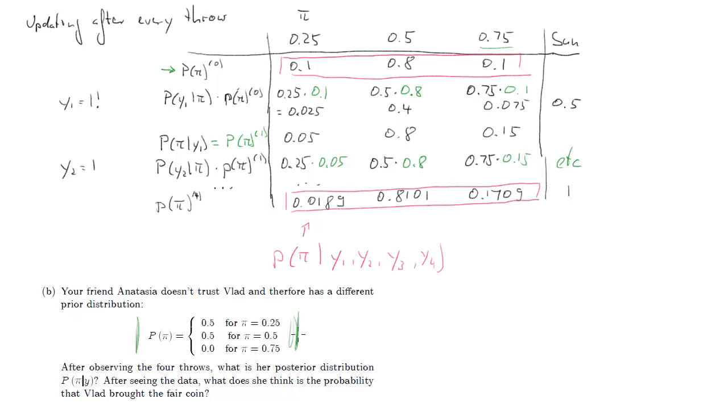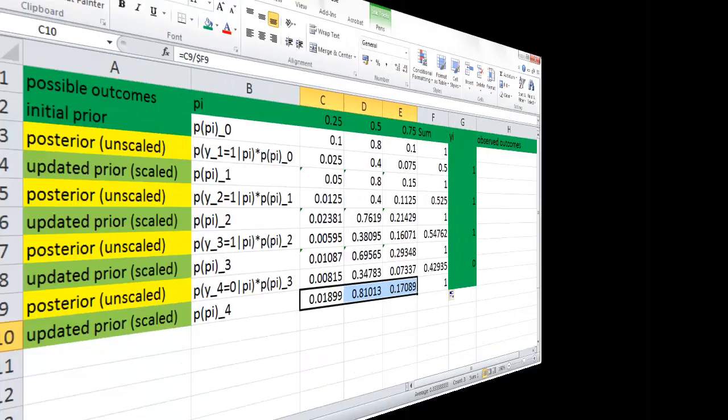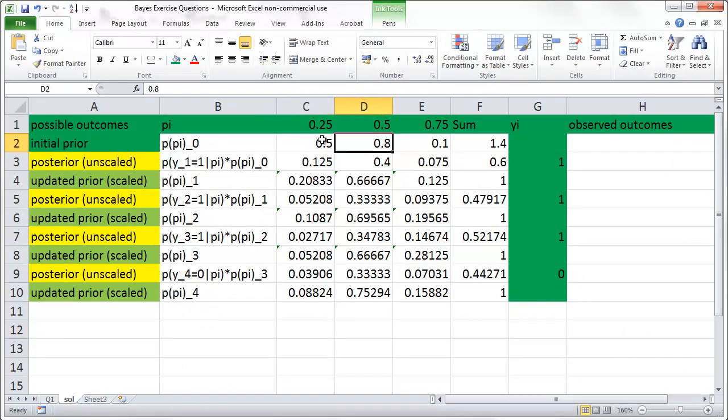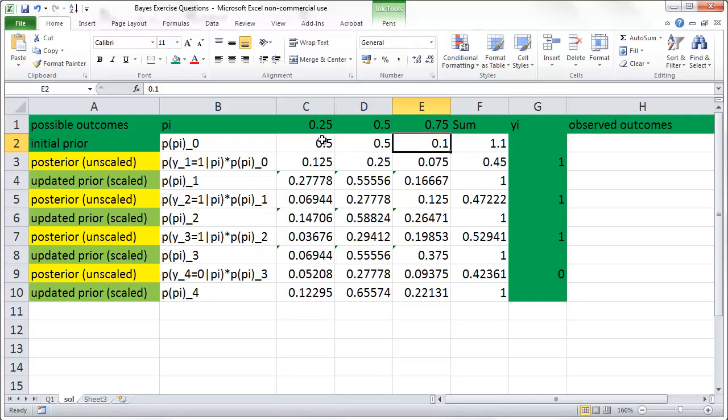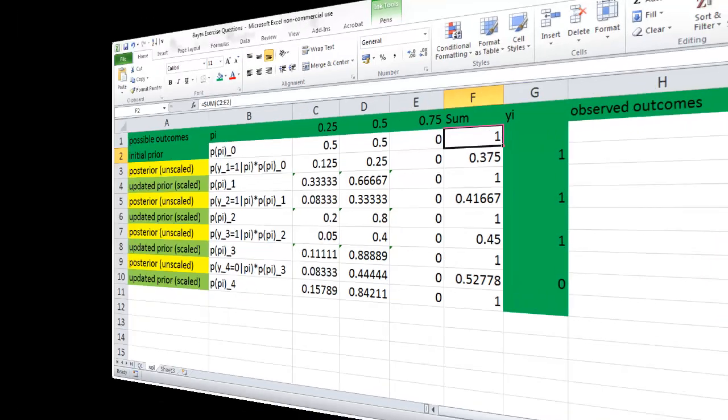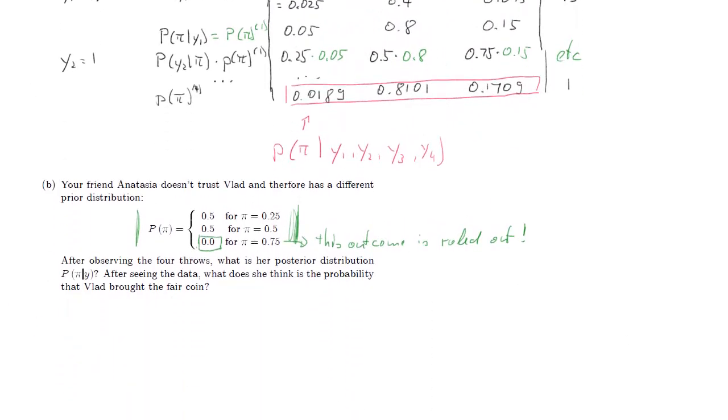So part B, we now use a different prior distribution. And here, someone thinks there's absolutely no possibility that Vlad brought the coin with pi equals 0.75. This is ruled out. Basically, whatever now our data evidence says, this is going to be ruled out. And we will soon see that we'll get always zeros in that right-hand column. So all we need in our table, and that's why this is quite handy, we'll change the prior in the first line, or the initial prior. That was 0.5, 0.5, and 0. And all the calculations should still be correct.